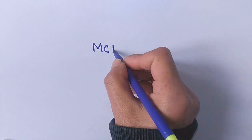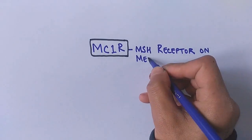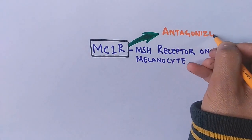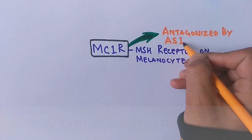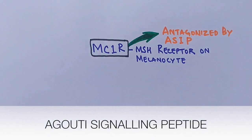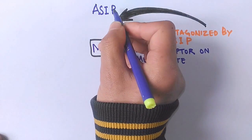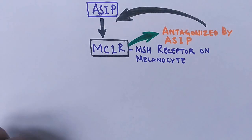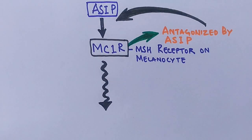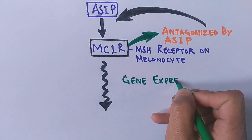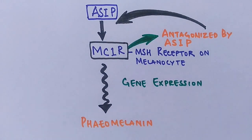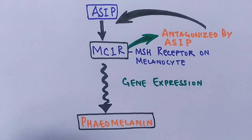The MC1R receptor on melanocytes can be antagonized by ASIP — Agouti signaling peptide. When ASIP binds instead of MSH and creates a signaling cascade, it does not produce eumelanin; rather, it produces a melanin called pheomelanin. In this way, the ASIP gene is also responsible for eye color formation.